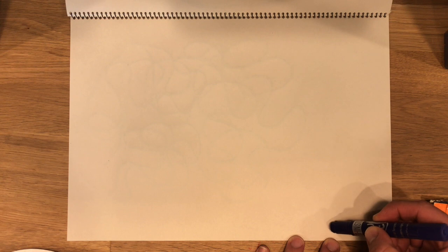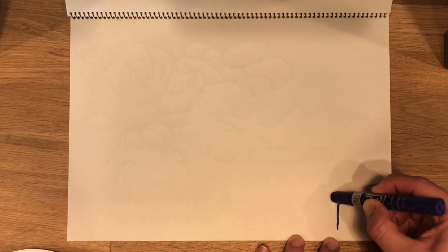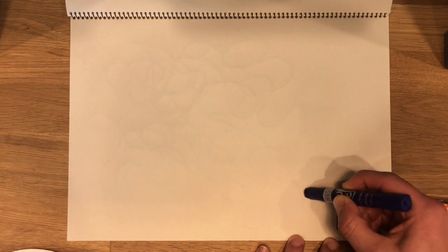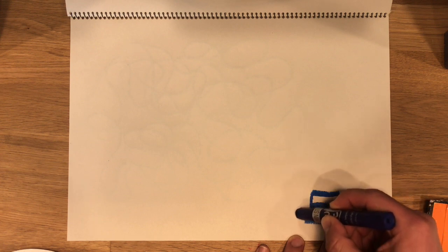And traditionally, a meander is something that you might see in Greek or Roman design or architecture where a line approaches its destination, then goes further away.